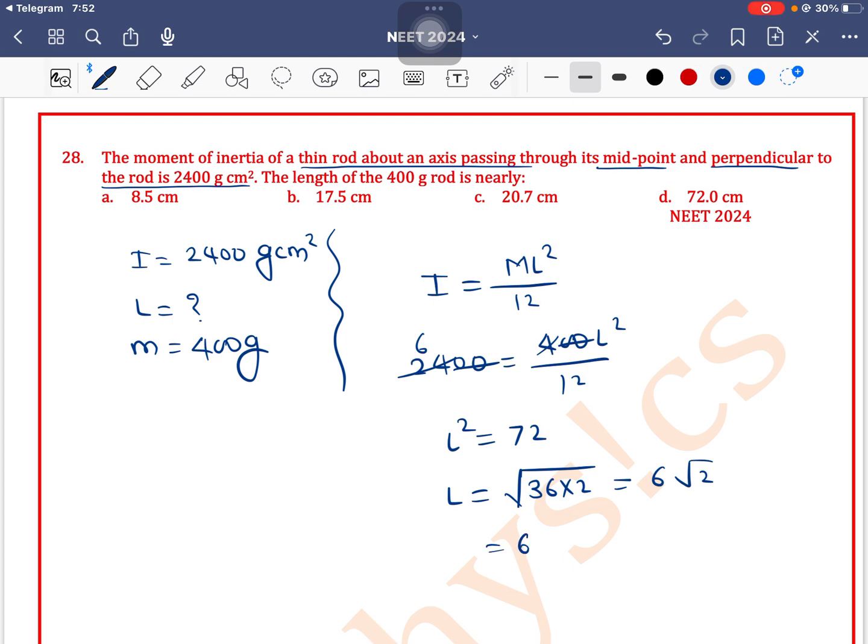What is the value of root 2? Root 2 is 1.414, so this will be equal to 6 into 1.4. So 6 into 1.4, 6 into 4 is 24, 6 into 1 is 6, 6 plus 2 is 8, approximately 8.4. Option A is the correct one.